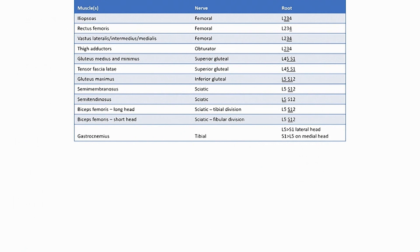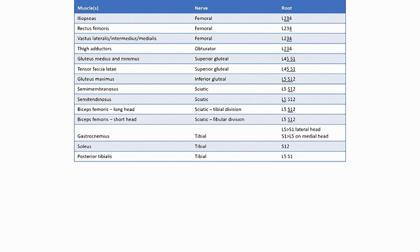The gastrocnemius muscle is supplied by the tibial nerve. The lateral head of gastroc is primarily L5, the medial head is primarily S1 — 'L5 lateral' is the memory trick. The soleus muscle is also supplied by the tibial nerve, S1 and S2. Posterior tibialis muscle is supplied by the tibial nerve, L5 and S1. The flexor halicis longus and flexor digitorum longus share the same innervation from the tibial nerve, L5, S1, and S2.